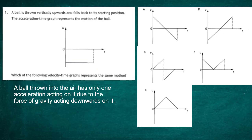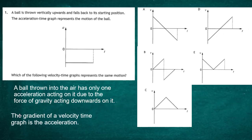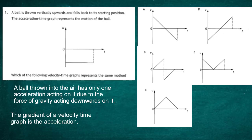So our first major statement: a ball thrown into the air has only one acceleration acting on it, due to the force of gravity acting downwards. The other key point is that the gradient of a velocity-time graph at any point represents the acceleration. So we are looking for a velocity-time graph with a single straight line sloping downwards — a constant negative gradient with no change in slope.